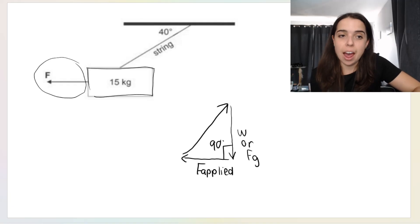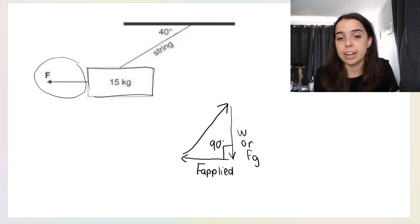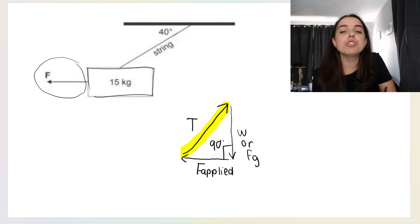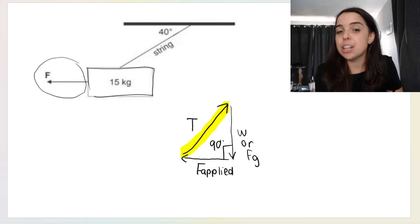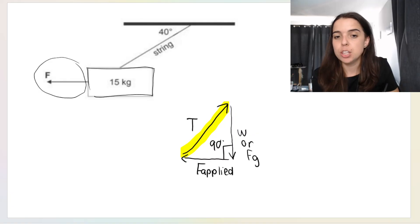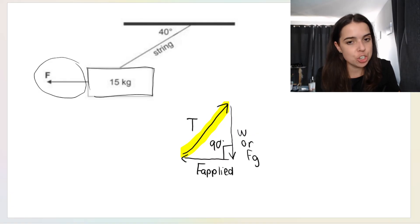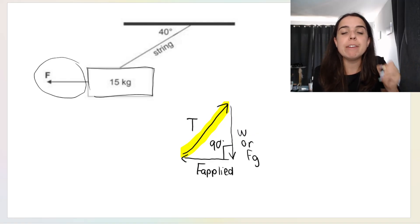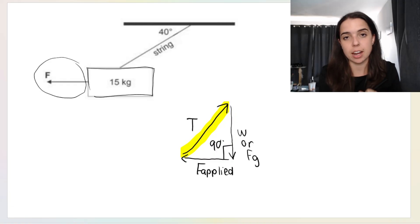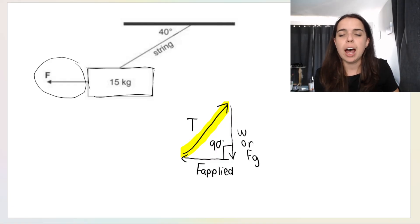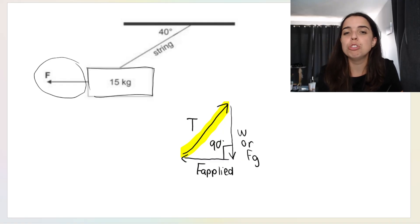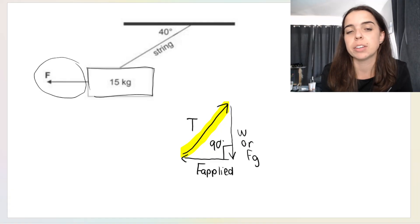Now, listen carefully. Remember to label the tension arrow — that is T for tension. If we have a string or a rope, it's a tension force in that rope, so we call it T. You can write out tension or FT as long as you label it. It is very, very important to label these diagrams. We need two or three angles in order to do the calculations.